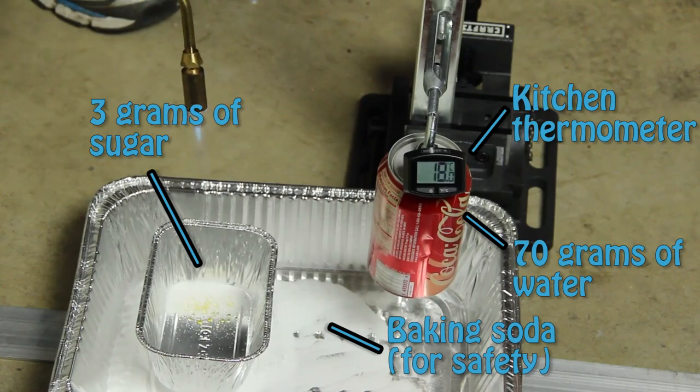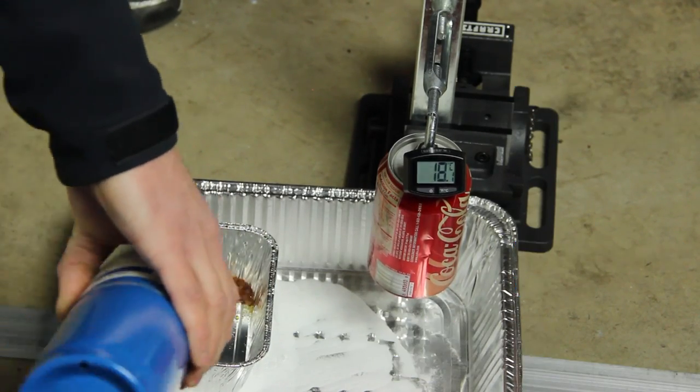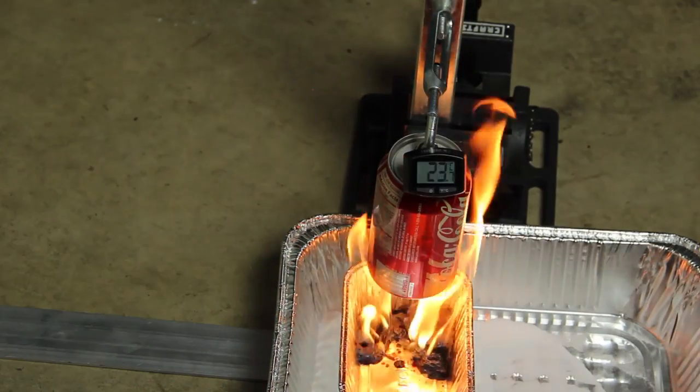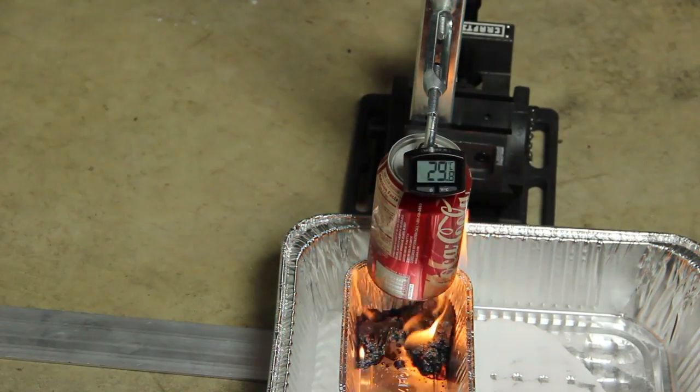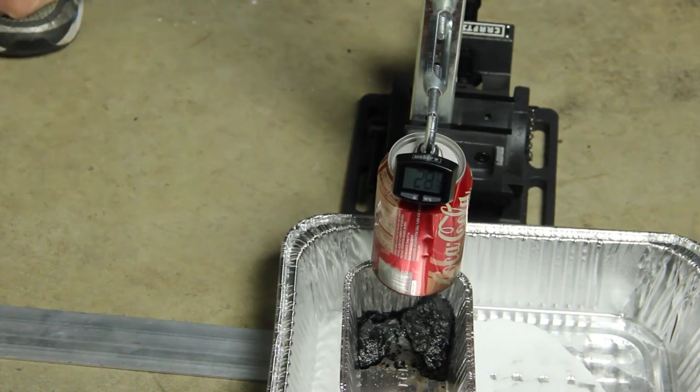We used 3 grams of sugar as our carbohydrate. We lit it on fire and placed it under a can of water. The fire burned out quickly, and the temperature rose about 10 degrees. We learned from prior experimentation that we had to get the sugar into a liquid state so it could ignite.